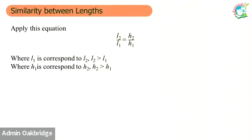So this equation: you take L2 over L1 equals to H2 over H1, whereby L2 is more than L1, H2 is more than H1. Of course, you can assume that L2 is less than L1, no problem. If you make L2 less than L1, then your H2 also has to be less than H1, it's up to you.